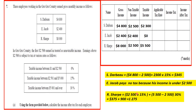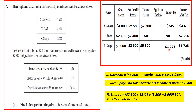We fill out the form: EJ Cup has zero income tax; Dabo has $345; and R. Sharp has $1,275. Then we calculate income after tax: $4,800 minus $345 gives Dabo $4,455. EJ Cup's income tax is zero, so his income after tax remains $2,400. R. Sharp's income after tax is calculated similarly.